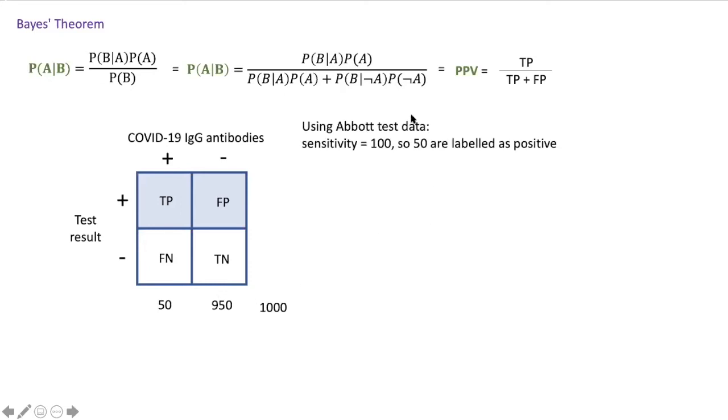Using the newest data from Abbott on the IgG test, so that's the LabCorp one that we're using now, the sensitivity of that test is reported as a hundred percent, so that means that all 50 people in our population who have IgG antibodies will correctly be labeled as positive.